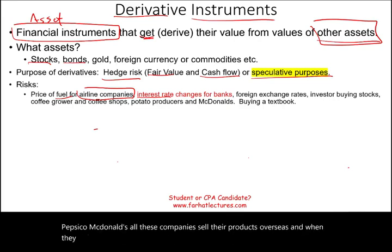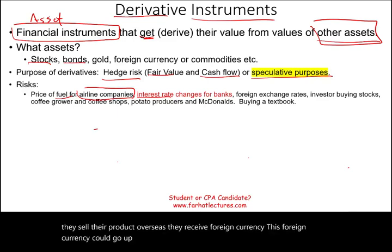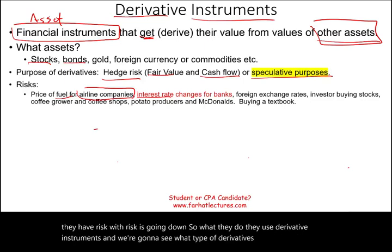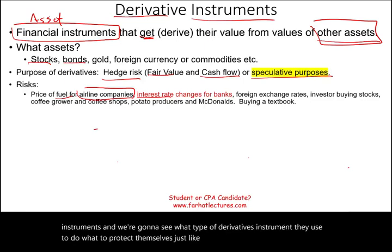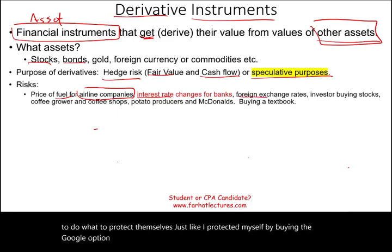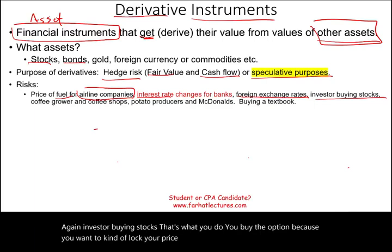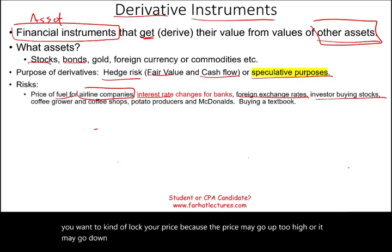Companies like Johnson & Johnson, PepsiCo, and McDonald's sell products overseas and receive foreign currency. That foreign currency can go up or down in value, creating risk. They use derivative instruments to protect themselves from foreign currency exchange risk — just like buying the Google option protected us. Investors buying stocks can also buy options to lock in a price, in case it goes too high or drops too much.